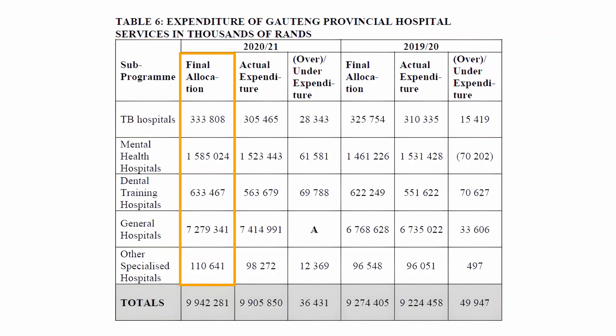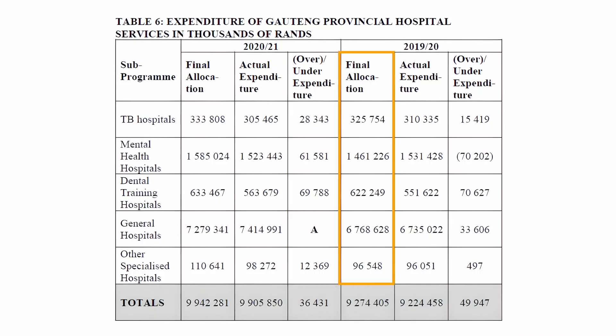The second column lists the final allocation for the 2020-2021 tax year. The third column lists the actual expenditure for 2020-2021. The fourth column lists the over or under expenditure for 2020-2021. The fifth column lists the final allocation for 2019-2020. The sixth column lists the actual expenditure for 2019-2020, and the seventh column lists the over or under expenditure for 2019-2020.